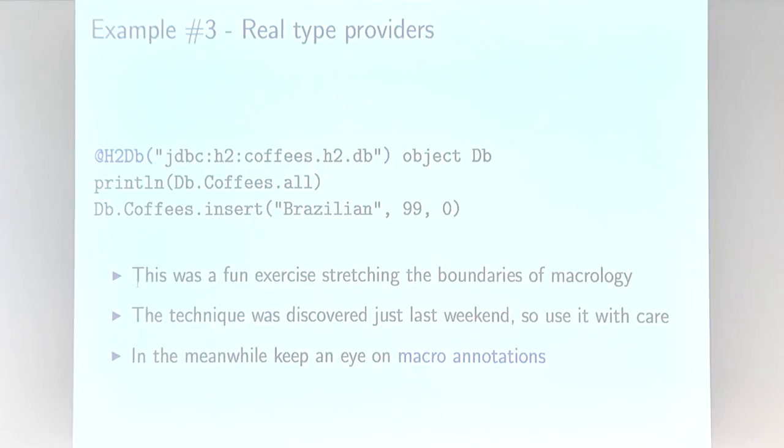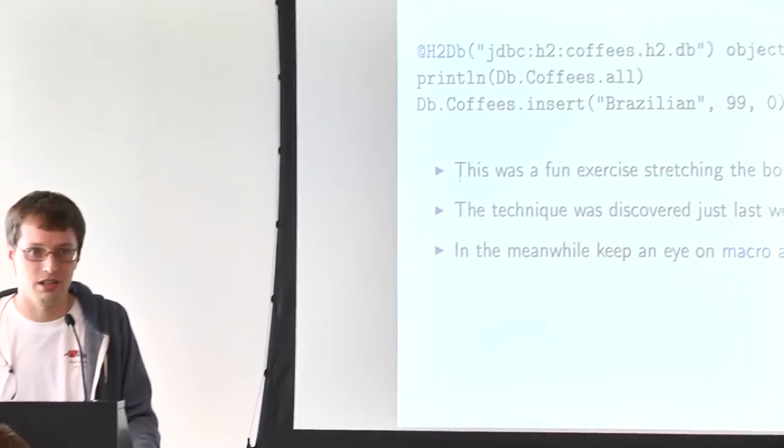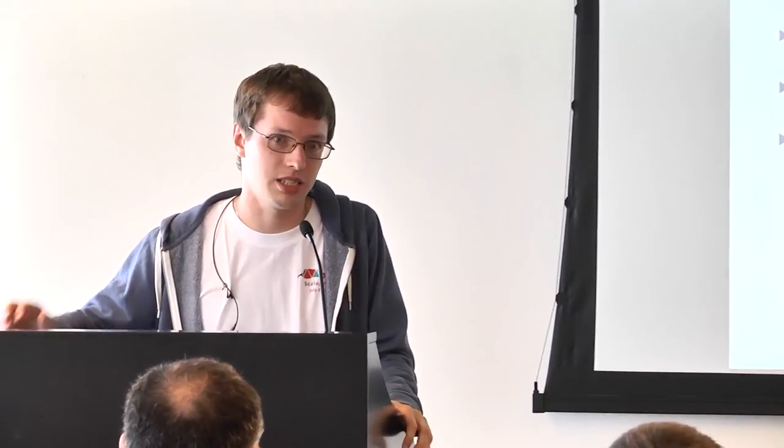For these global type generation scenarios, I'd recommend waiting for real type providers via macro annotations, which Stefan mentioned might arrive in 2.12. These macro annotations will generate real types and real members without any structural tricks. Now let's get into the second category: static checks. Since macros run at compile time and can do arbitrary things, some of this can involve validating that your code has desired properties.